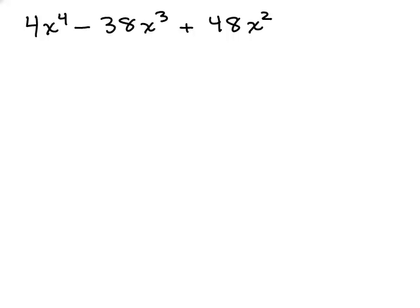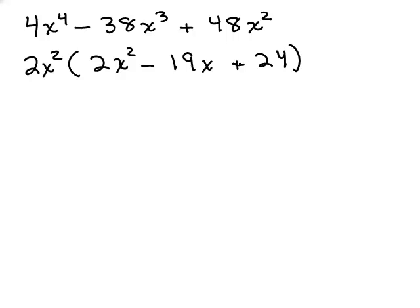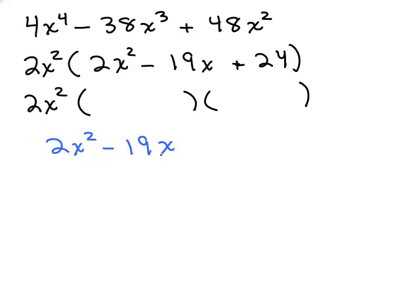Here's another problem where you can hopefully take out the greatest common factor — try this one on your own. The greatest common factor is 2x squared. So we pull out 2x squared, which leaves us with 2x squared minus 19x plus 24. Now I have a nice quadratic trinomial to factor. The final answer, if it does factor, will be written with those two parentheses — don't forget to keep writing the 2x squared. So let's factor 2x squared minus 19x plus 24.